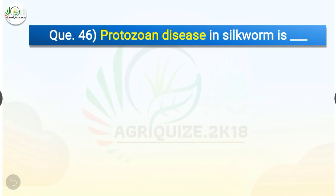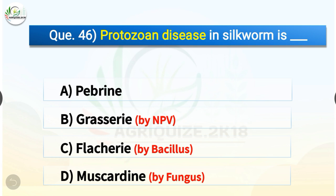Question number forty-six: protozoan disease in silkworm is — options are pebrine, grasserie, flacherie, or muscardine. The correct answer is option A, pebrine. Pebrine is the protozoan disease in silkworm, whereas grasserie is caused by NPV, flacherie is caused by Bacillus, and muscardine is caused by fungus.